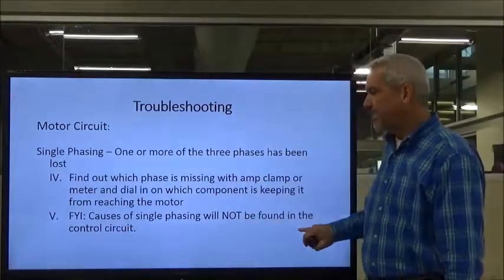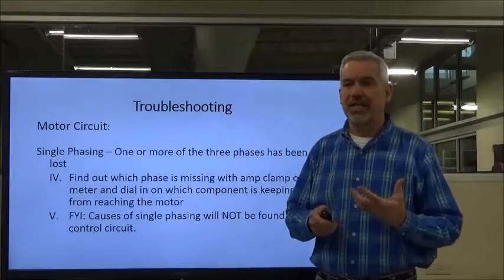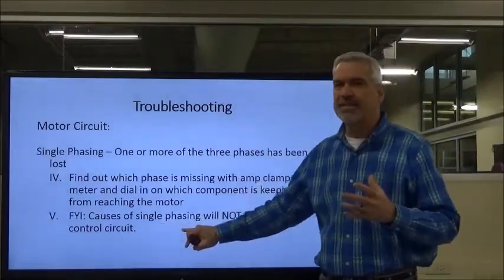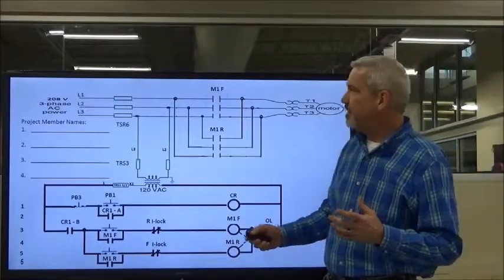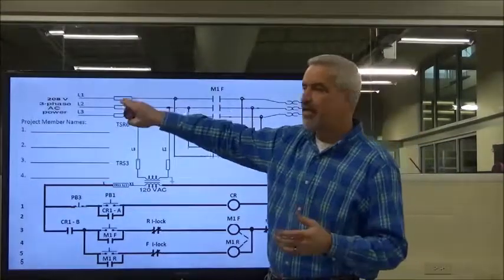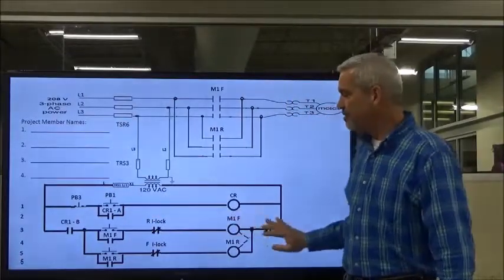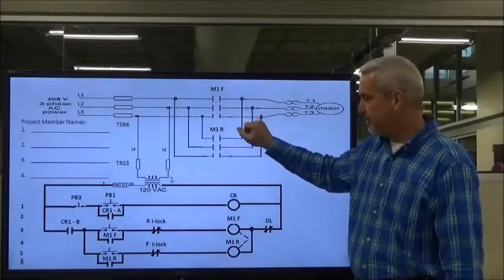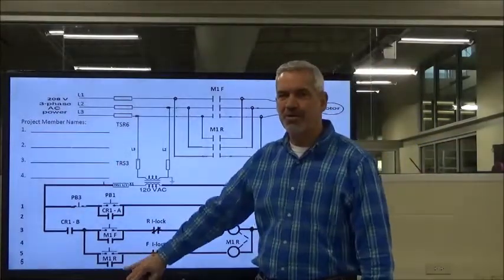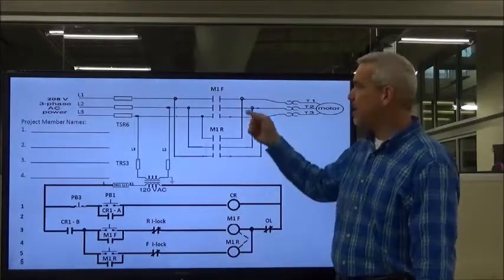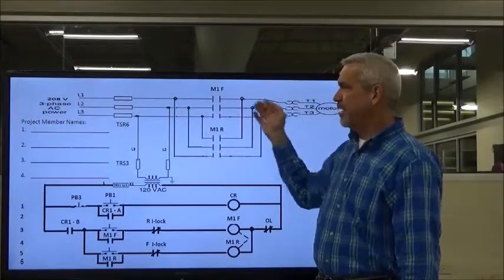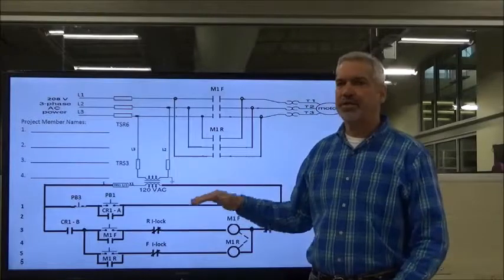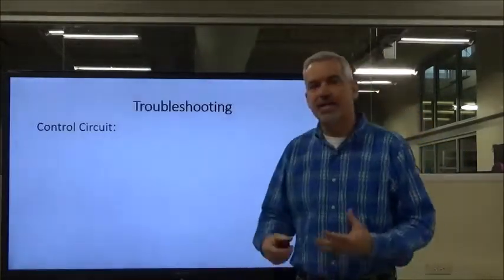Here's another important point: when you have a single-phasing situation, you're not going to find the problem in the control circuit. I lost one of my phases — there is no component in the control circuit that's causing me to lose one of three phases. When you have a motor single-phasing, don't even worry about the control circuit. We know the control circuit is working because it's trying to bring the motor in and close the contacts. Only one or two phases are getting to the motor, but we know the control circuit is okay. The control circuit has nothing to do with the single-phase situation.